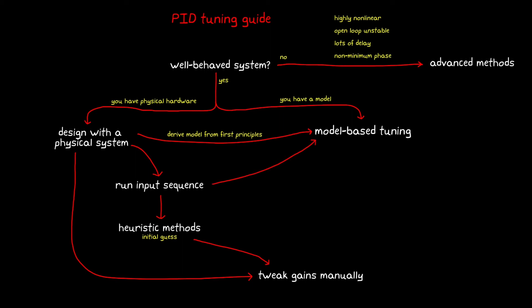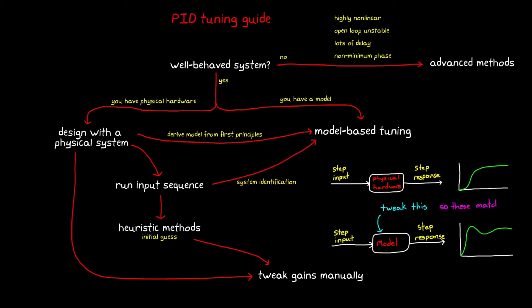An alternative way to develop a model is to use system identification techniques. System ID uses a measured response from the hardware, often a step response, and then finds an optimal set of model coefficients to match, as close as possible, the two responses.